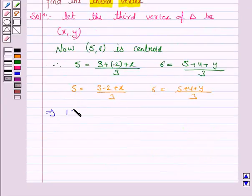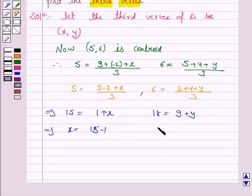This implies 15 equals 1 + x, and this implies 18 equals 9 + y. So x equals 15 - 1, and y equals 18 - 9.